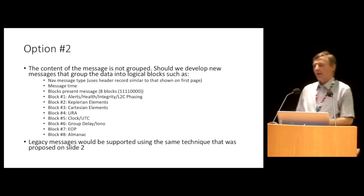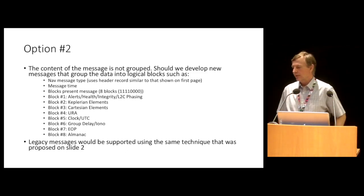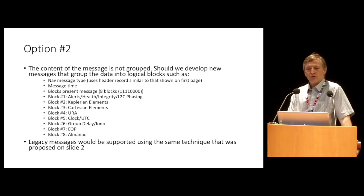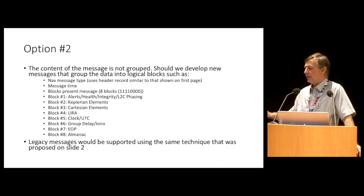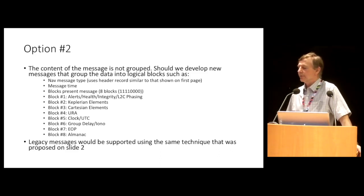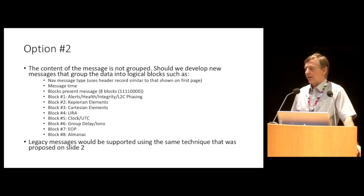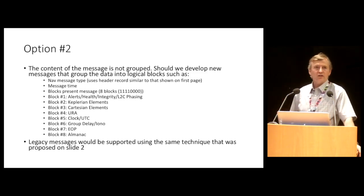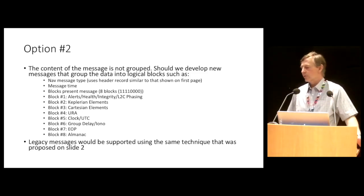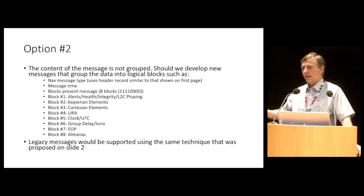The other option I proposed would be to have the data blocked — you would have generic blocks of data including alerts, health, and integrity in a block; Keplerian elements in a block; Cartesian elements in a block; user range accuracy in a block; group delay; EOP; and Almanac. Then you'd have a mask so that all of these things wouldn't necessarily have to be present in the file. The header that Oliver's group proposed would still be the same and it would be backward compatible, though I realize this is a big change.